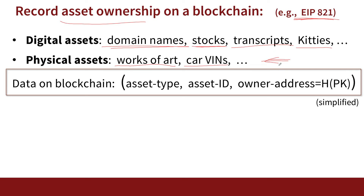Regardless, if you want to implement asset management on the blockchain, essentially what gets written to the blockchain is a transaction that says: asset type — say, work of art — asset ID, the particular work of art we're talking about, and here is the address, the hash of the public key of the owner. So if the owner wants to prove that they really own that work of art, all they have to do is prove that they know the secret key corresponding to this public key.